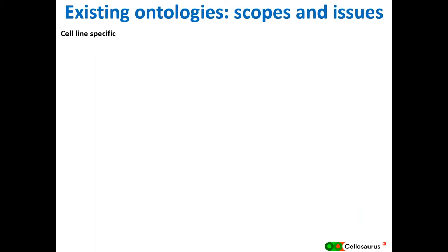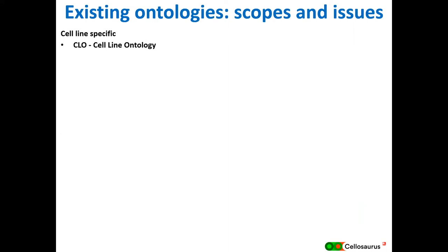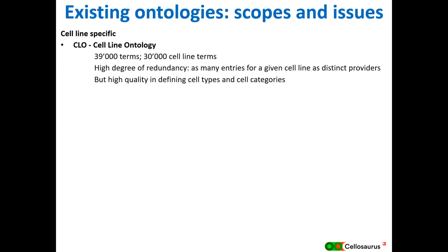We were looking for ontologies or databases on cell lines. At that time, there were two ontologies specific to cell lines. One that still exists is the Cell Line Ontology, which currently has about 29,000 terms describing around 30,000 cell lines — with some redundancy. It has high quality in defining cell types and categories, but compared to all cell lines that exist and need to be captured, it is not complete enough, and it doesn't contain a lot of detailed information.